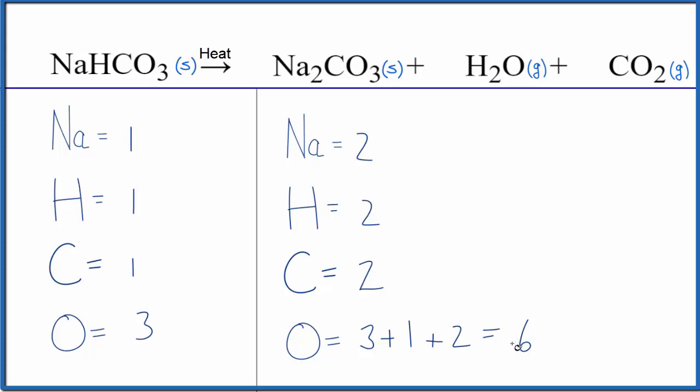Let's start with the sodiums—it's always good to leave oxygens till last. We'll put a two in front of sodium bicarbonate. So one times two gives us two sodium atoms, one times two gives two hydrogen atoms, one times two gives two carbon atoms, and three times two gives us six oxygen atoms.